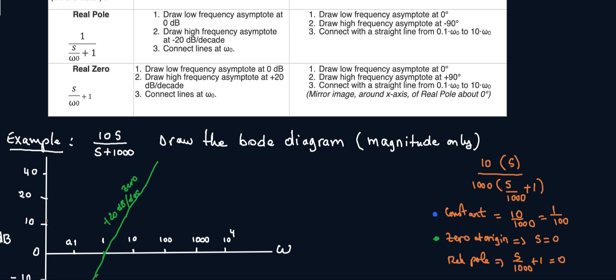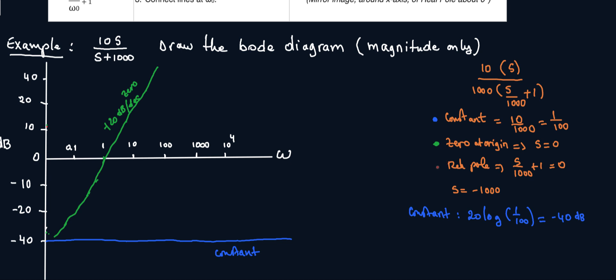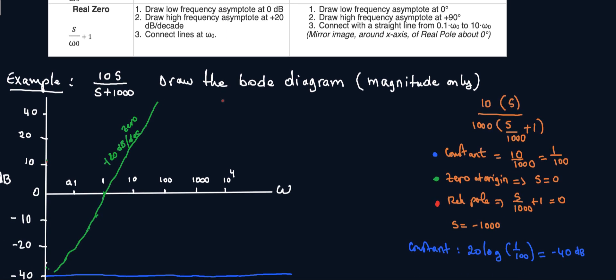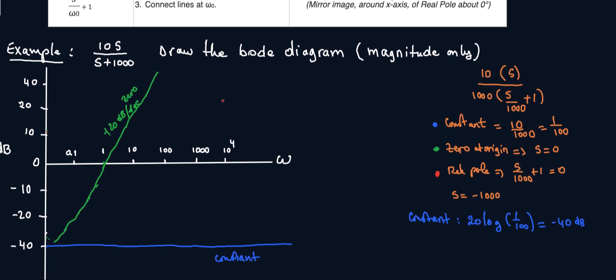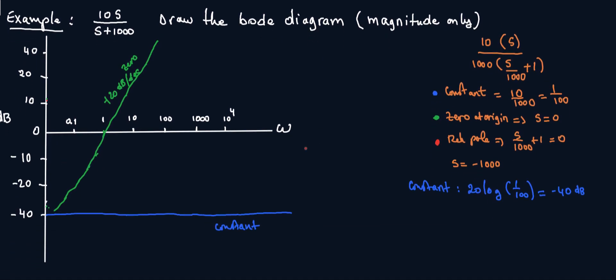And then my last term here is a real pole. So I'm going to draw my real pole. What does my real pole say? My real pole says to draw low frequency assets at zero dB, draw it at minus 20 dB at omega zero, omega zero. So omega zero is 1000. So this is 1000. So it's going to pass through here.